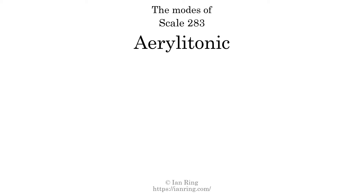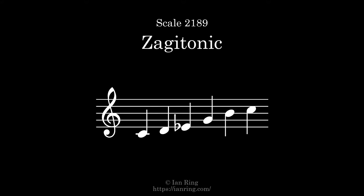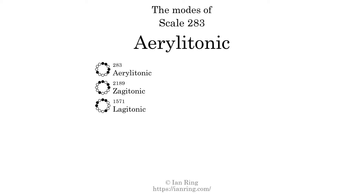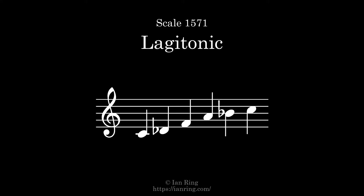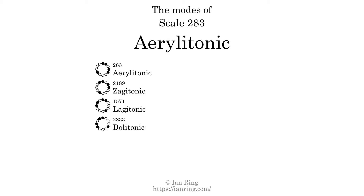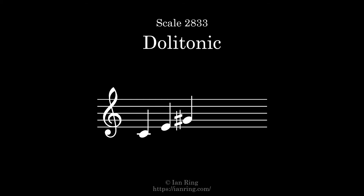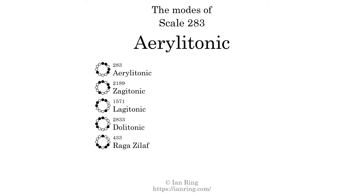This scale has 5 modes. The first mode is itself. The second mode is scale 2189, also known as Zegatonic. It sounds like this. The third mode is scale 1571, also known as Lagatonic. It sounds like this. The fourth mode is scale 2833, also known as Dolatonic. It sounds like this. The fifth and last mode is scale 433, also known as Raghazilov. It sounds like this.